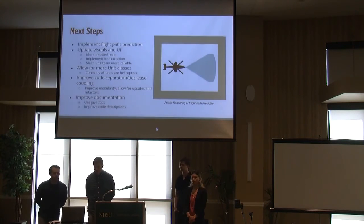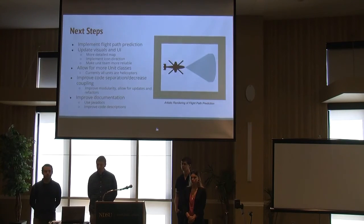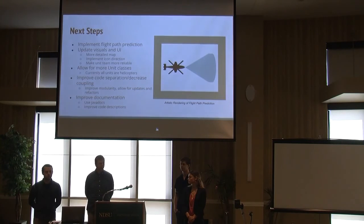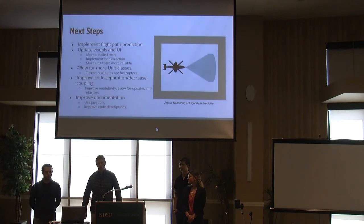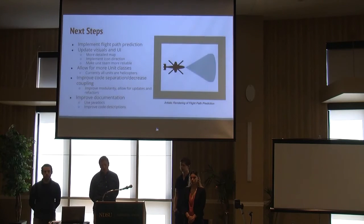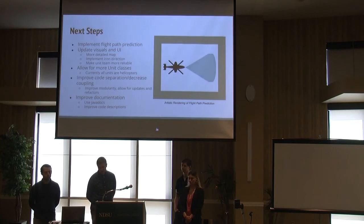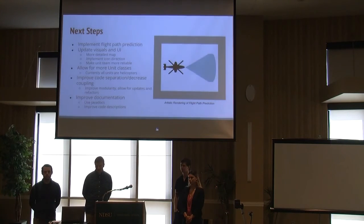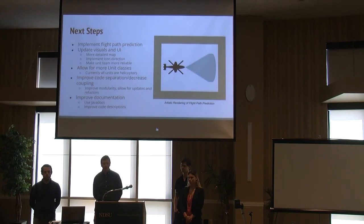For next steps, we would have liked to implement path prediction — a couple of ideas include taking the slope and adding a cone out in front. We'd also like to update more visuals and UI, get more map options, and maybe have terrain. We just had the continental world map, which was okay to work with, but adding more would require working with mapping software that none of us had experience with. We'd also like to add more unit classes such as tanks, airplanes, or ground troops. Improve separation and decrease coupling by splitting code into better classes. And improve documentation, since OpenMap had poor documentation — so that anyone editing our code would have better documentation available.